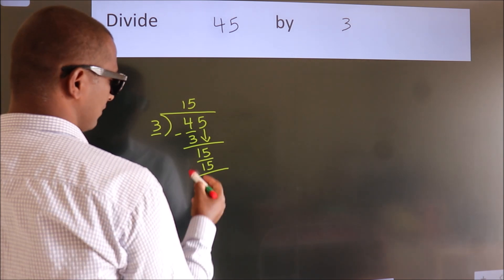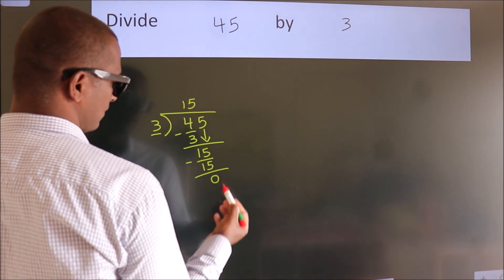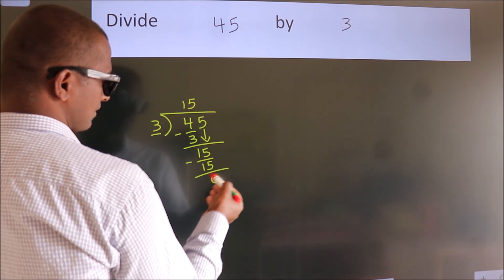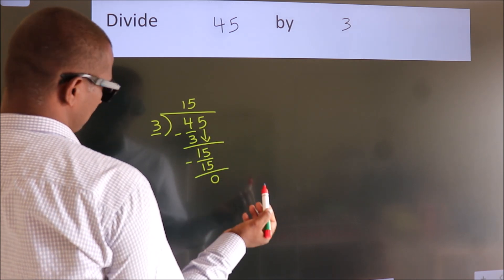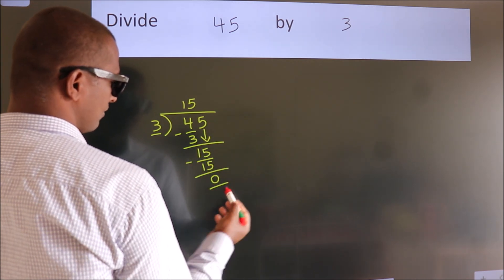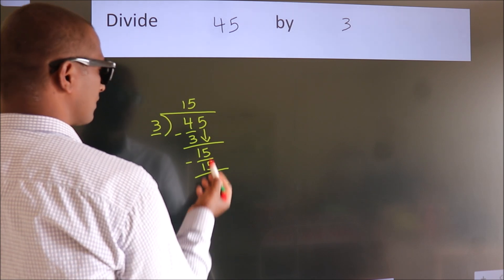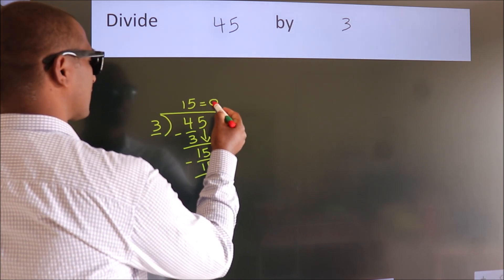Now we subtract. We get 0. After this, no more numbers to bring down. We got remainder 0. So this is our quotient.